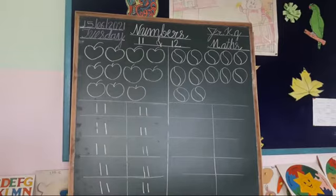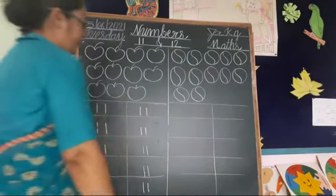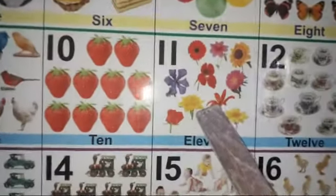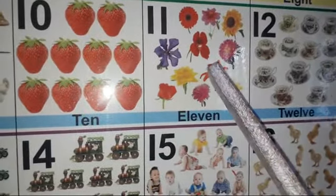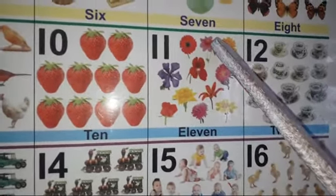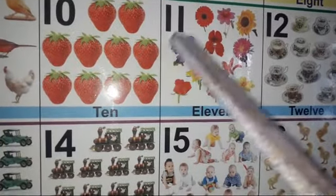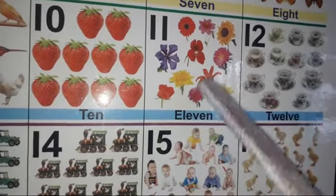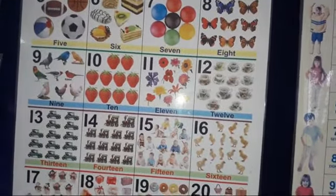Look at the chart board. Here we go. Counting: one, two, three, four, five, six, seven, eight, nine, ten and eleven. How many flowers are here? Eleven.